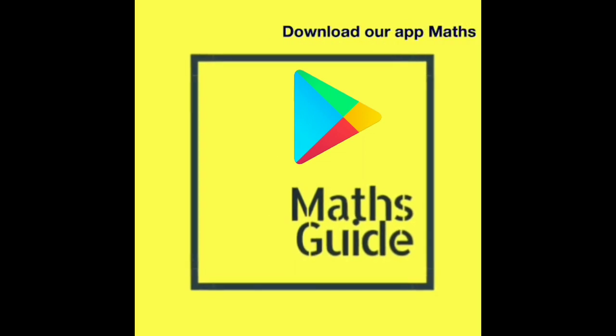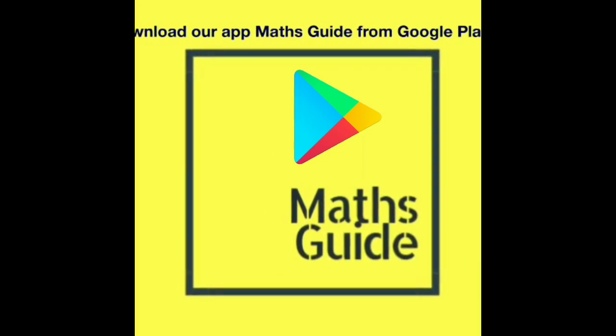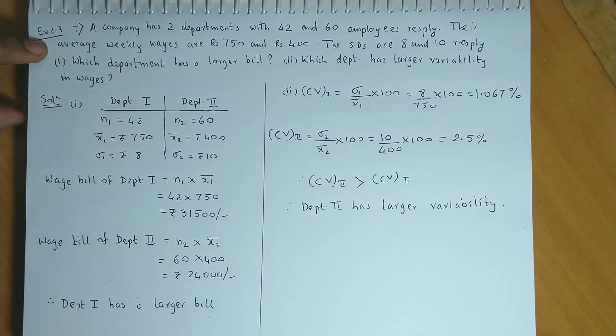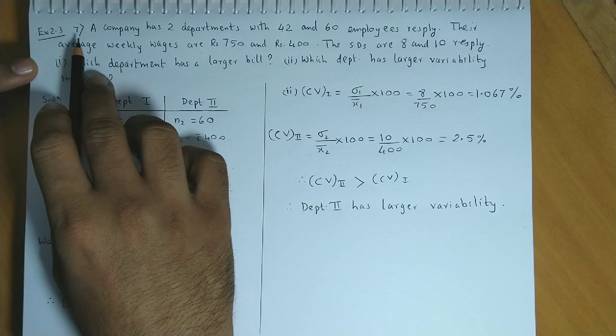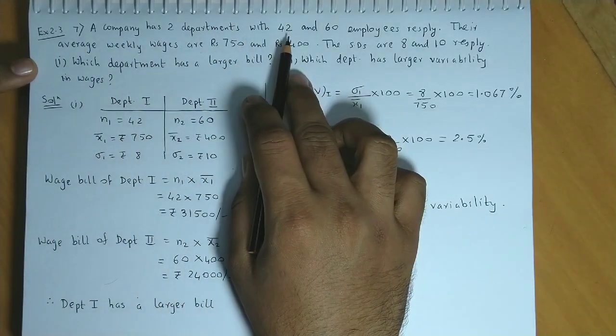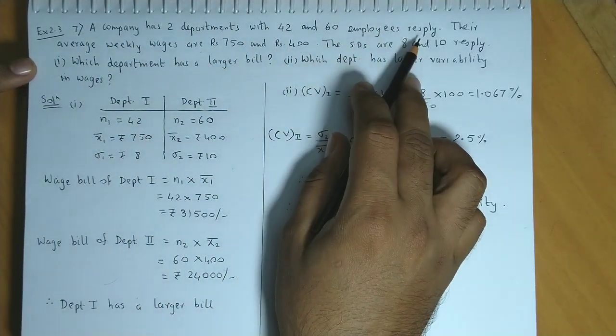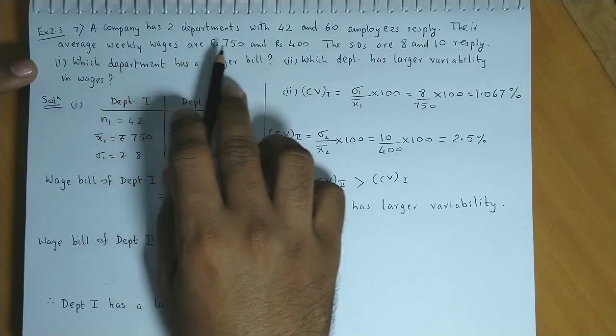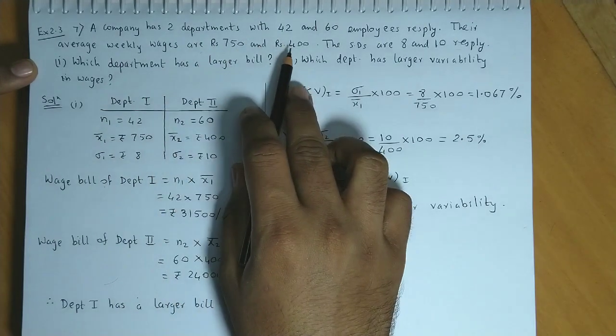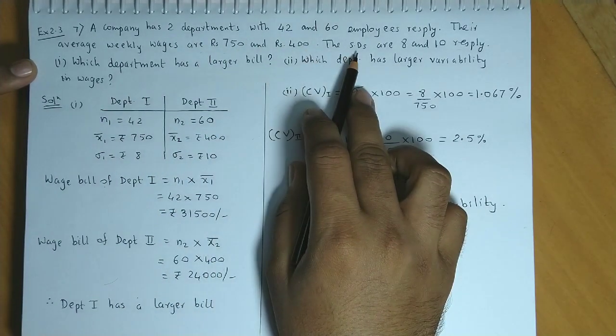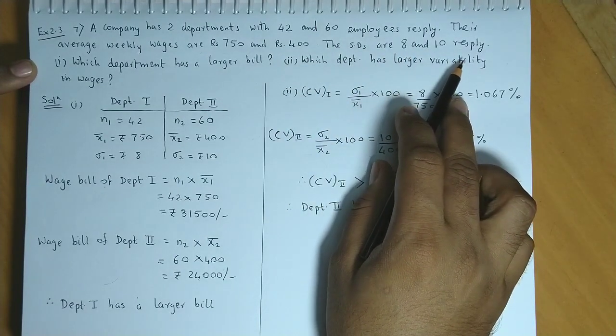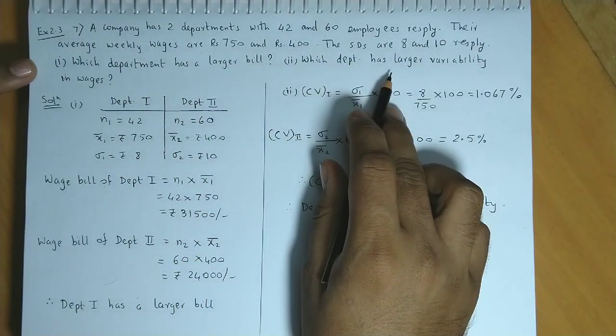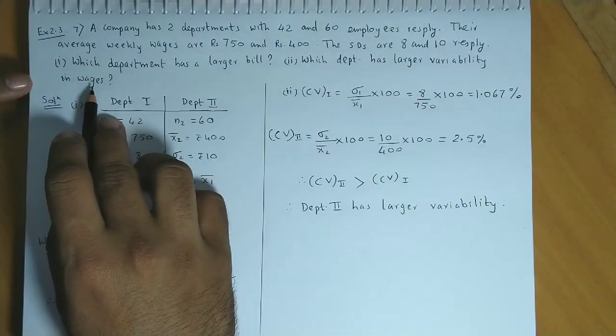Download the app Maths Guide from Google Play today. Exercise 2.3, Question number 7: A company has two departments with 42 and 60 employees respectively. Their average weekly wages are rupees 750 and rupees 400. The standard deviations are 8 and 10 respectively. Which department has a larger bill and which department has larger variability in wages?